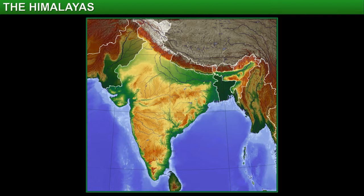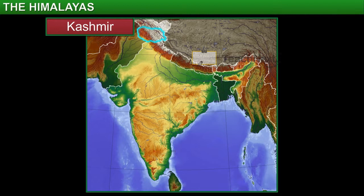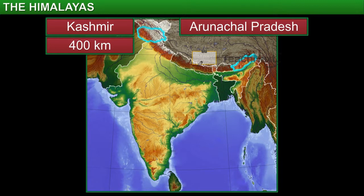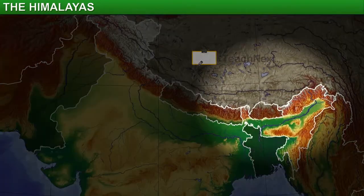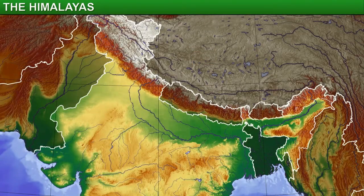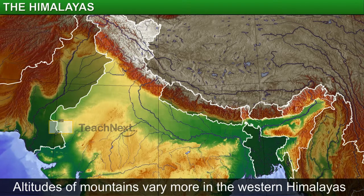The width of this range varies. For instance, in Kashmir, the range is 400 kilometers wide, while in Arunachal Pradesh, the width decreases to 150 kilometers. If you compare the eastern and the western halves of the range, you will find considerably more difference in the altitudes of various mountains in the western half.